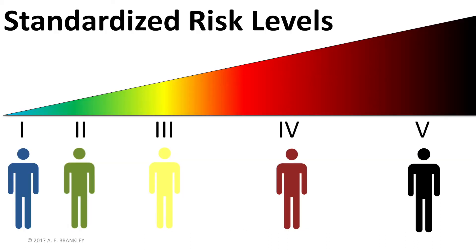Whenever I think of the standardized risk levels, this is the visual that comes to mind: a continuous dimension with a spectrum of colors representing the gradual yet meaningful changes in risk — from individuals at the one end who should be of little to no concern, to those at the opposite end who are almost certainly going to commit a crime.